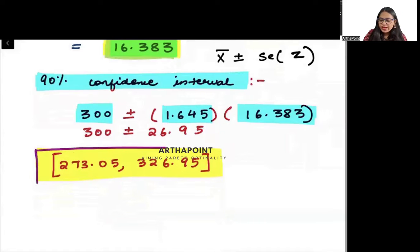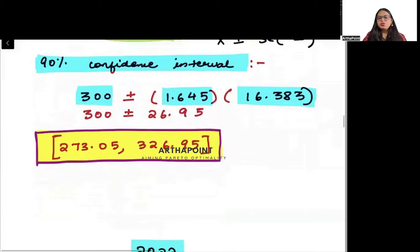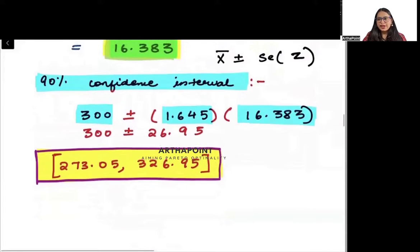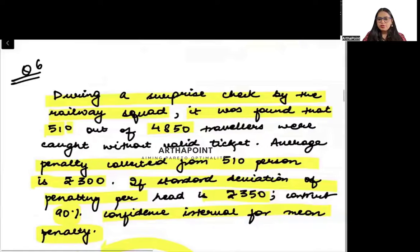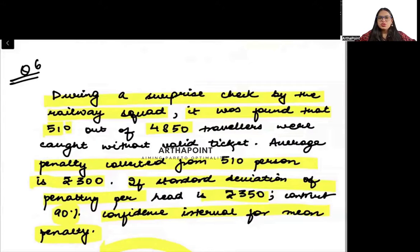we will go ahead and get the confidence interval to be 273.05 to 326.95, and this would be our confidence interval. So this is the answer to this question.